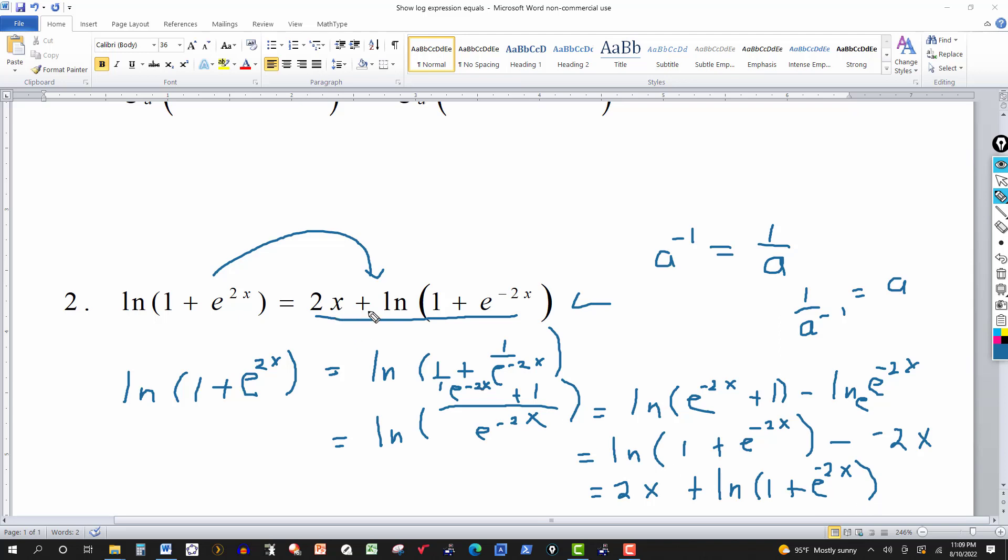You got 2x plus ln of 1 plus e to the negative 2x. This checks out, that's the solution. Thanks for watching, we'll see you next time.